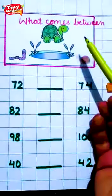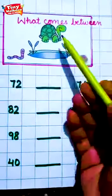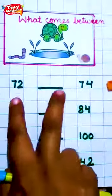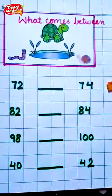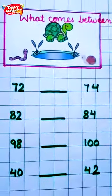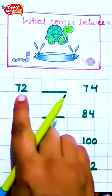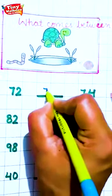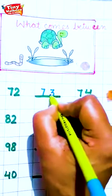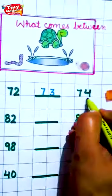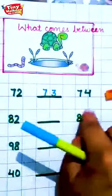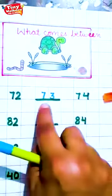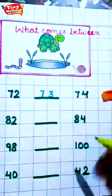Now we will do what comes between. What comes between? Between means beach me. So you will tell me that I have written these two numbers below them. Okay. So let's do it together. 72. Next number is 73. 74. Now speak this whole group. 72, 73, 74.